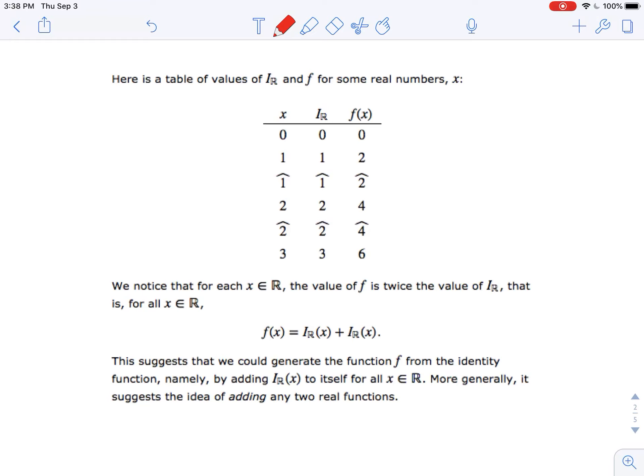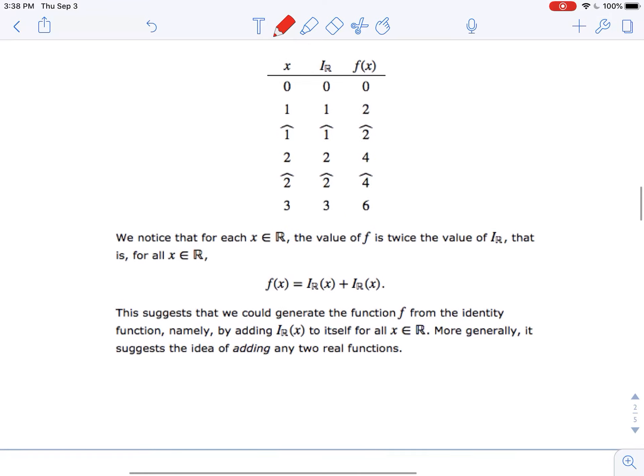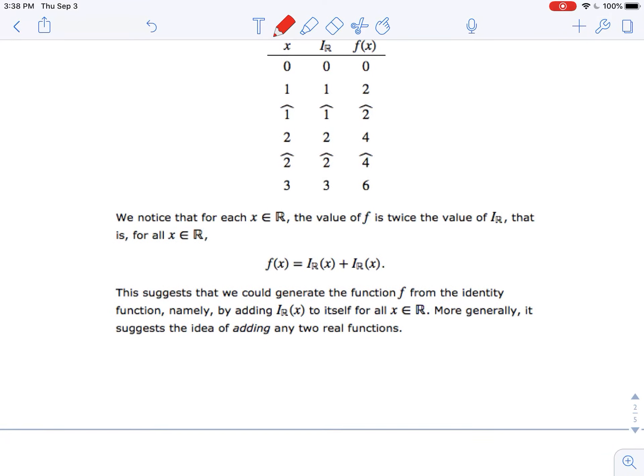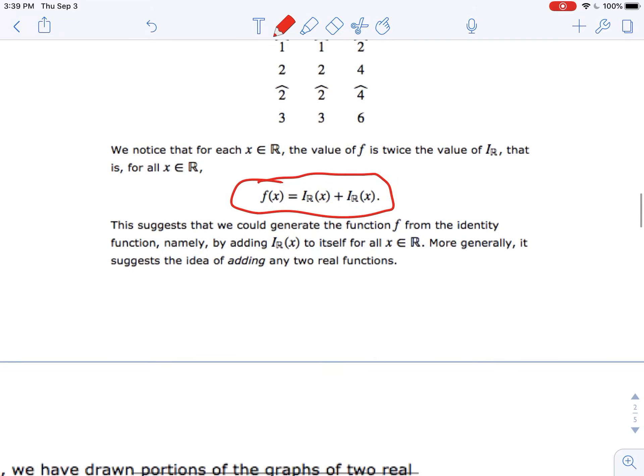So, when X is one, the identity relation was going to be one. When it's negative one, it's going to be negative one. F of X was going to be twice as much. So, that was the relation. So, again, I can think of that F of X as being the sum of two identity relations.